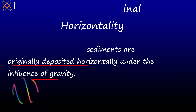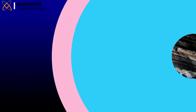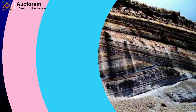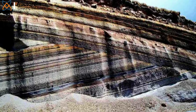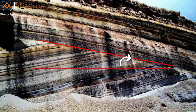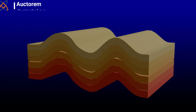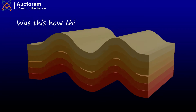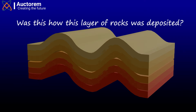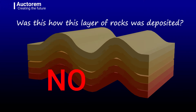Because the earth is not static, there have been movements and processes which alter the form and shape of rocks. Some rocks therefore look like they were not deposited horizontally — those rocks have been tilted as a result of tectonic forces. When you look at this layer of rock, do you think this is how it was formed? No.